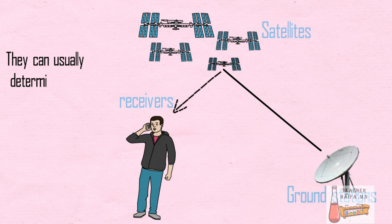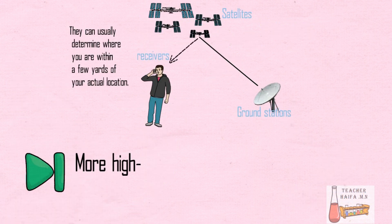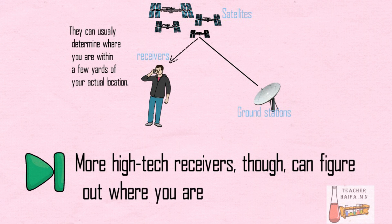They can usually determine where you are within a few yards of your actual location. More high-tech receivers, though, can figure out where you are to within a few inches.